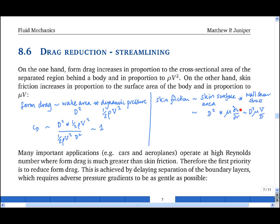Where I've just replaced the v I see here with the characteristic velocity, big V, and the r here with the characteristic distance, big D. And the d's cancel to give d mu v.